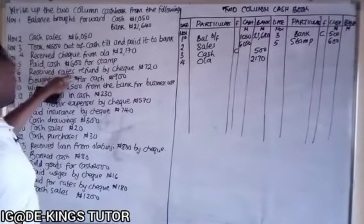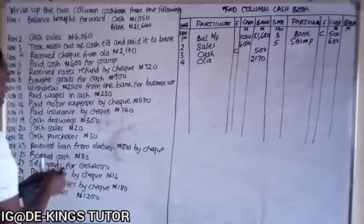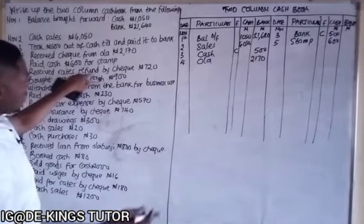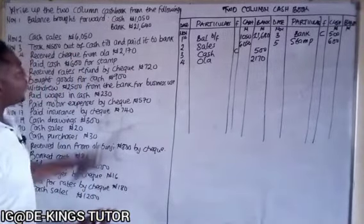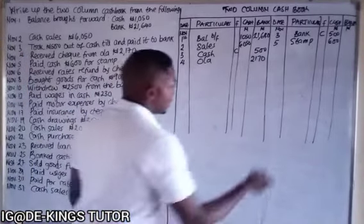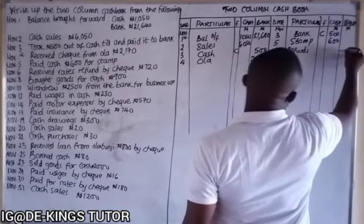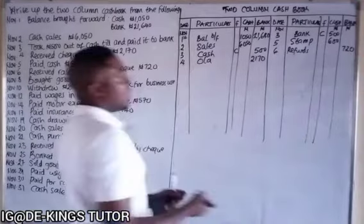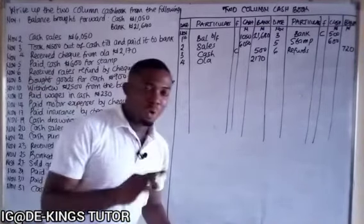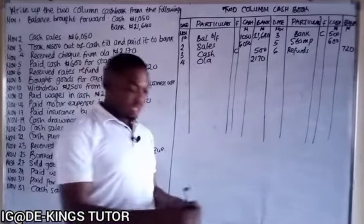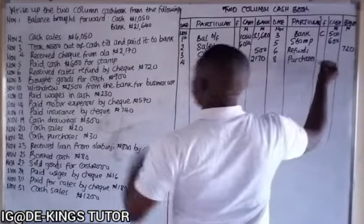November 6 — received rates refund by check 720. Since it's received by check, it goes to the debit bank column: 720. November 8 — bought goods for cash 900. 'Bought goods' means purchases. Since it's paid in cash and going out, it is credited under the cash column: purchases 900.